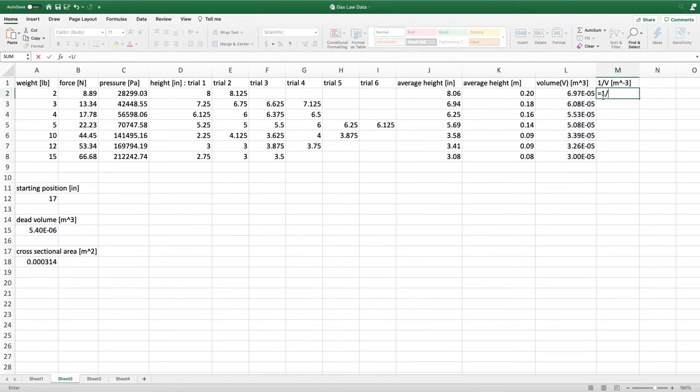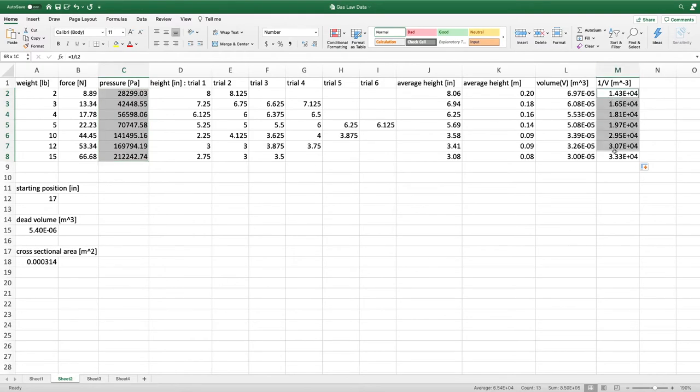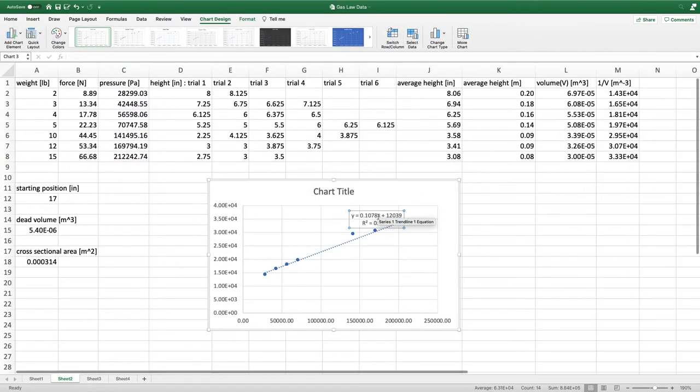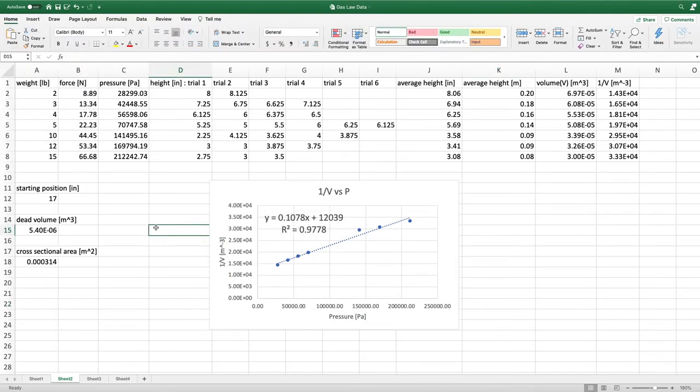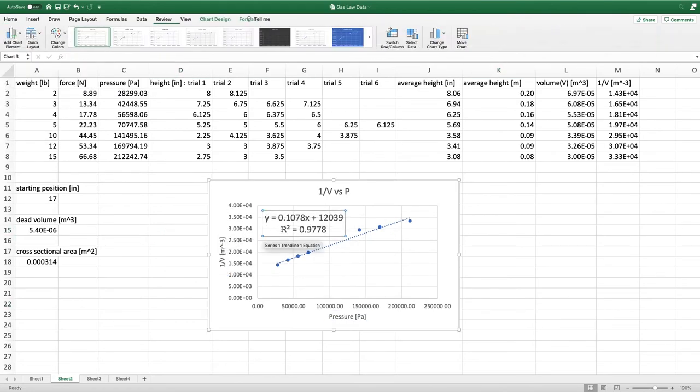Then make a column for 1 over the volumes. Now that we have our values for pressure and 1 over volume, we can make our graph. As you can see, the bike pump data isn't quite as nice as the syringe data, but still quite convincing, so either method will work.